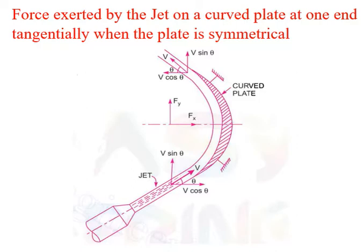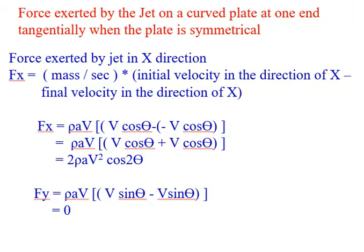The force exerted by the jet in the y-direction: the initial velocity is V sin theta and the final velocity is also V sin theta. Therefore, Fy = rho A V (V sin theta minus V sin theta) = 0. So Fy is equal to zero. This is the force exerted by the jet on a curved plate at one end tangentially when the plate is symmetrical.